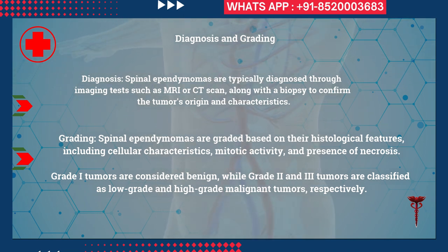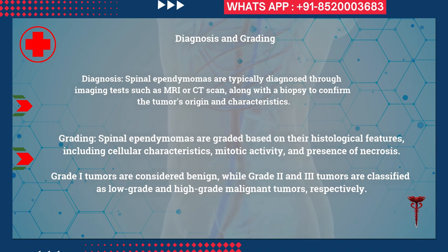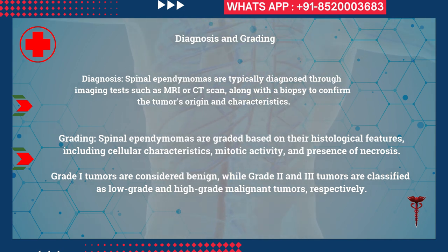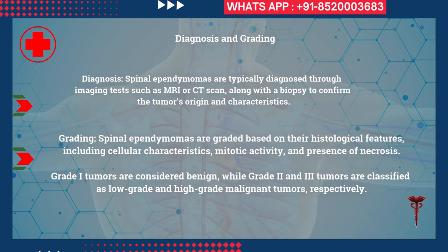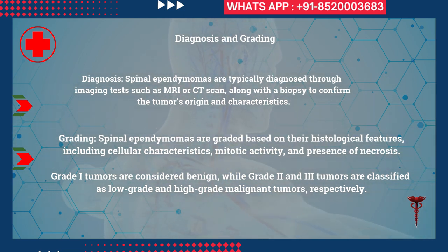Spinal ependymomas are graded based on their histological features, including cellular characteristics, mitotic activity, and presence of necrosis. Grade I tumors are considered benign, while Grade 2 and Grade 3 tumors are classified as low-grade and high-grade malignant tumors, respectively.